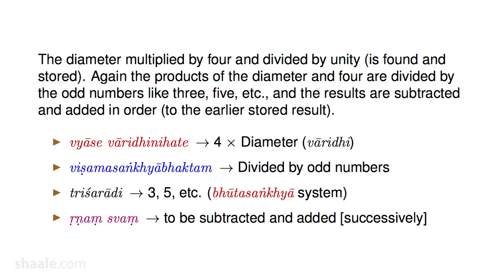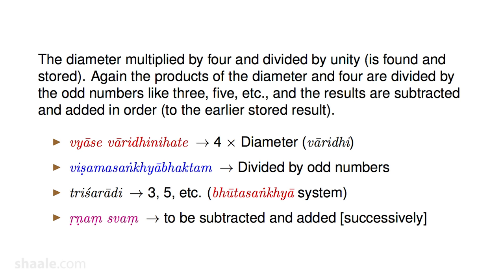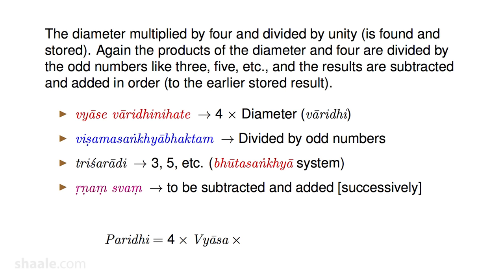Decoding the verse: 'Vyasa' is diameter; 'varidhi' is ocean, which represents 4 in bhuta-sankhya — so 'varidhi nihate' means multiplied by 4. 'Rupa hirte' means divided by 1 (rupa = 1), giving the first term: 4d divided by 1. Then keeping 4d in the numerator, 'Trisharadi vishama sankhya bhaktam' — tri is 3, shara is 5, and vishama-sankhya means odd numbers — so successive denominators are all odd numbers: 1, 3, 5...